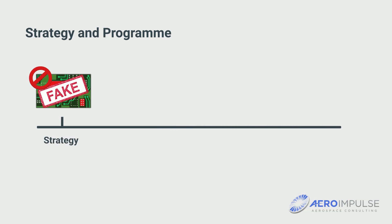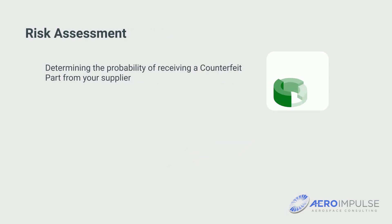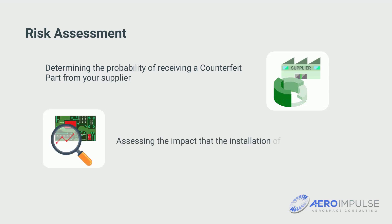The first step is a risk assessment to determine where and how high the risk is in your company. The risk assessment must include determining the probability of receiving a counterfeit part from your supplier, and assessing the impact that the installation of a counterfeit part has on the final product and its operation.